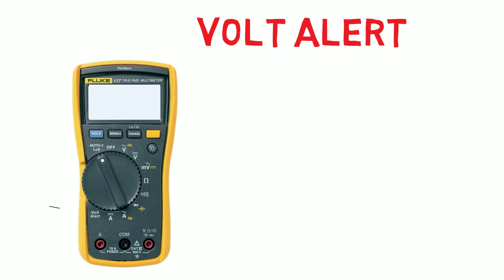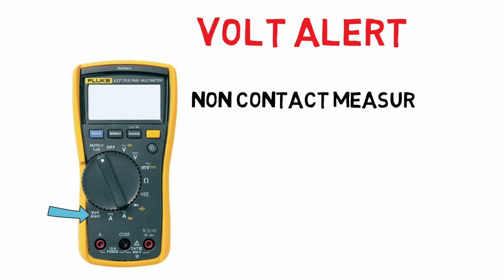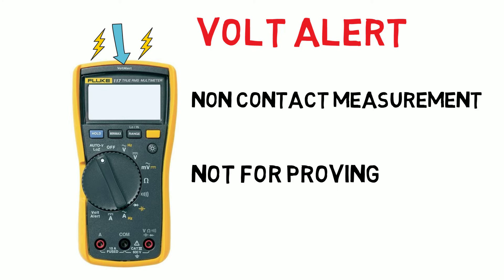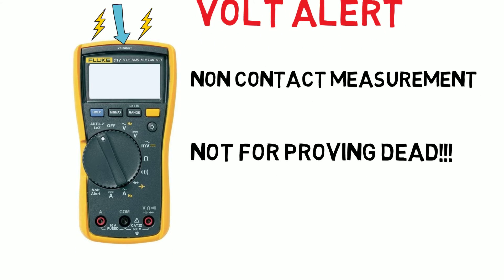Our last voltage measurement mode is the volt alert mode. In this mode the meter can detect AC voltage without the use of test leads — simply place the top of the meter near a live conductor. If a voltage is detected the meter will illuminate and a beeping sound will be present. Do not use this mode as proof there is no voltage, and always carry out a full test for dead with a proving unit before touching any conductor.